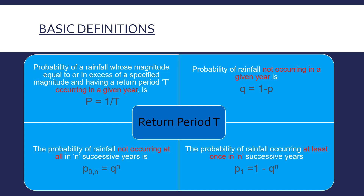The next two equations are important because most questions will be based on them. We have seen the probability of rainfall not occurring in a given year. Next we need to know the probability of it not occurring at all in n successive years. For example, in the next 5 years, what is the probability of the rainfall not occurring? That is Q raised to the power n, written as P₀ⁿ = Qⁿ. So for 5 successive years it is Q raised to 5.